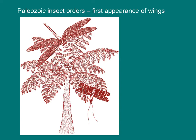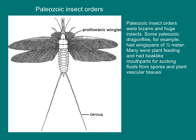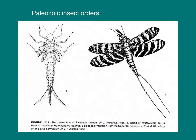The earliest winged insects were in the so-called Paleozoic insect orders. They hold their wings to the side of their body like dragonflies — they cannot fold their wings over the body like most other advanced insects. These early Paleozoic insects were bizarre creatures. They were huge; some had wingspans of over half a meter. They were mostly plant-feeding and had beak-like mouthparts that allowed them to feed from spores and plant vascular tissues. Some had distinctively patterned wings.